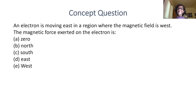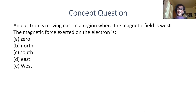Next concept question: an electron is moving east in a region where the magnetic field is west. The magnetic force exerted on the electron is zero, north, south, east, or west? Pause the video and think about it yourself.